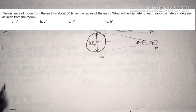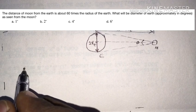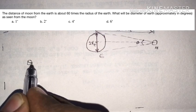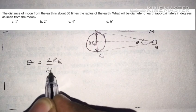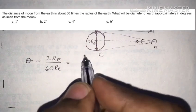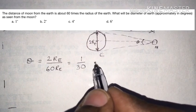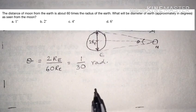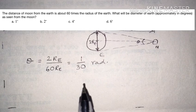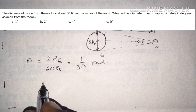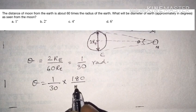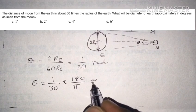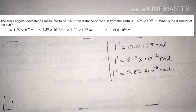Using the method of parallax, angle theta equals the opposite side divided by the distance, which is 2R_e divided by 60R_e, giving 1/30 radians. Converting to degrees: theta equals (1/30) into (180/pi), which gives approximately 2 degrees. So the answer is option B.